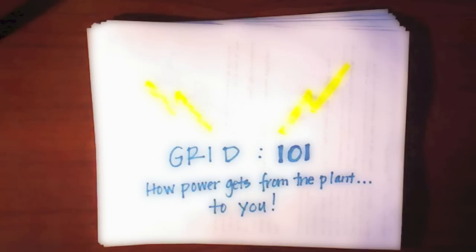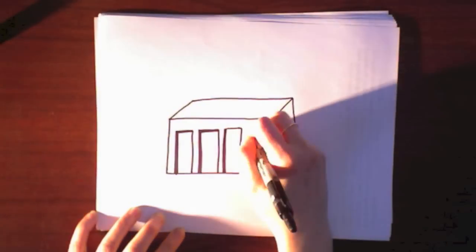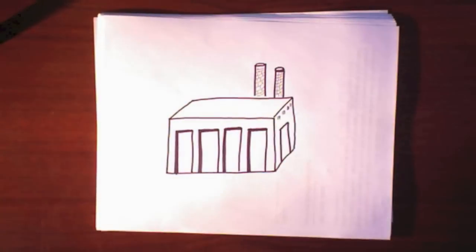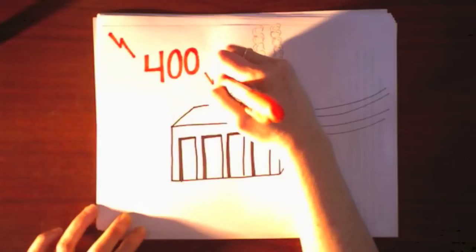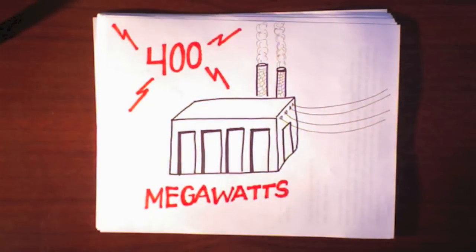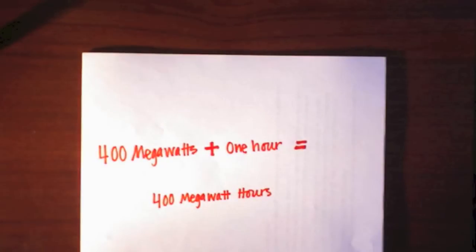Okay, so a power plant turns on, it burns something which makes steam, which turns a turbine, which cranks out power. And it runs at a constant rate of, let's say, 400 megawatts. If it does that for an hour, you've got 400 megawatt hours.